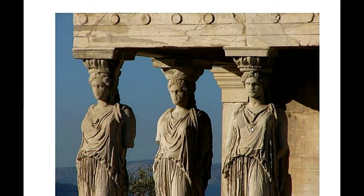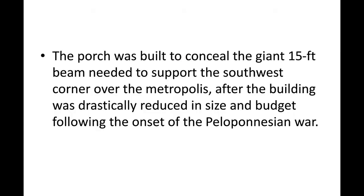Looking at a close-up of the Karyatid figures, you can clearly see that they are truly different from one another — even their hair, noses, and the folds of their drapery differ. They are not identical because columns back then were not fabricated. Unlike today where columns are molded and made uniform, these were individually hand-carved by skilled carvers of the classical period.